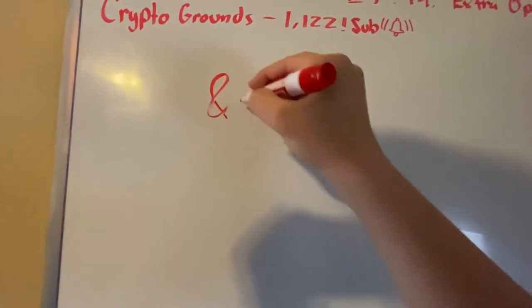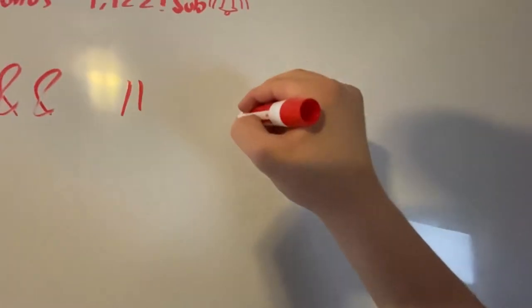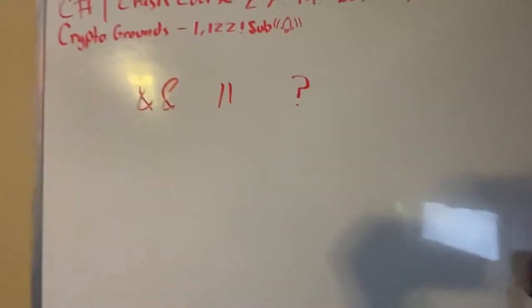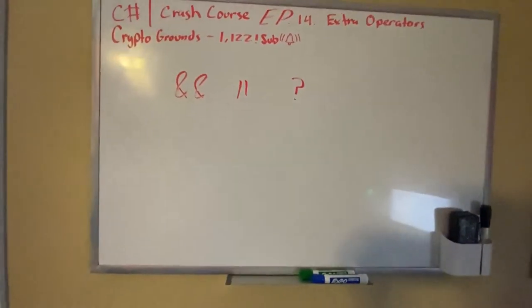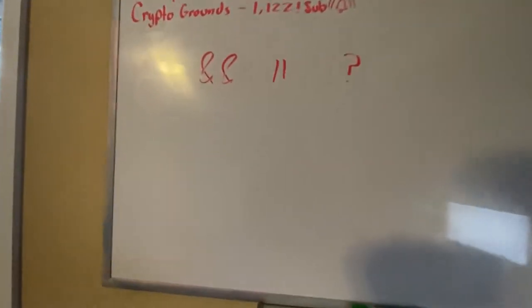All right, let's get on with it. So basically the ones I forgot, and I talked about this in the last video, is AND, OR, and the question mark operator. Okay, those are pretty much the main ones that I forgot, so I'm going to talk about this.